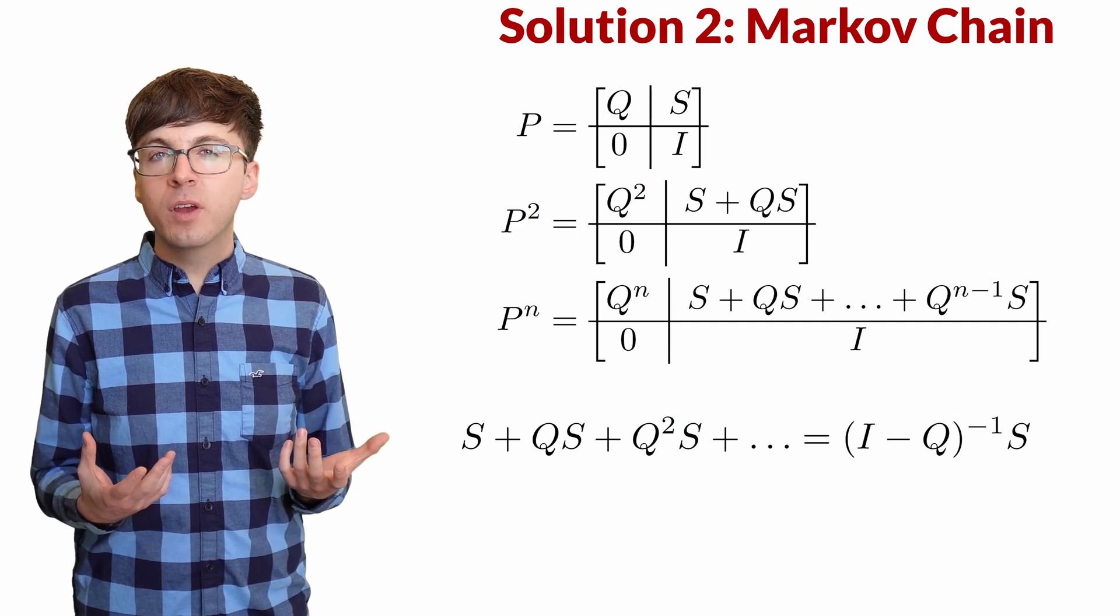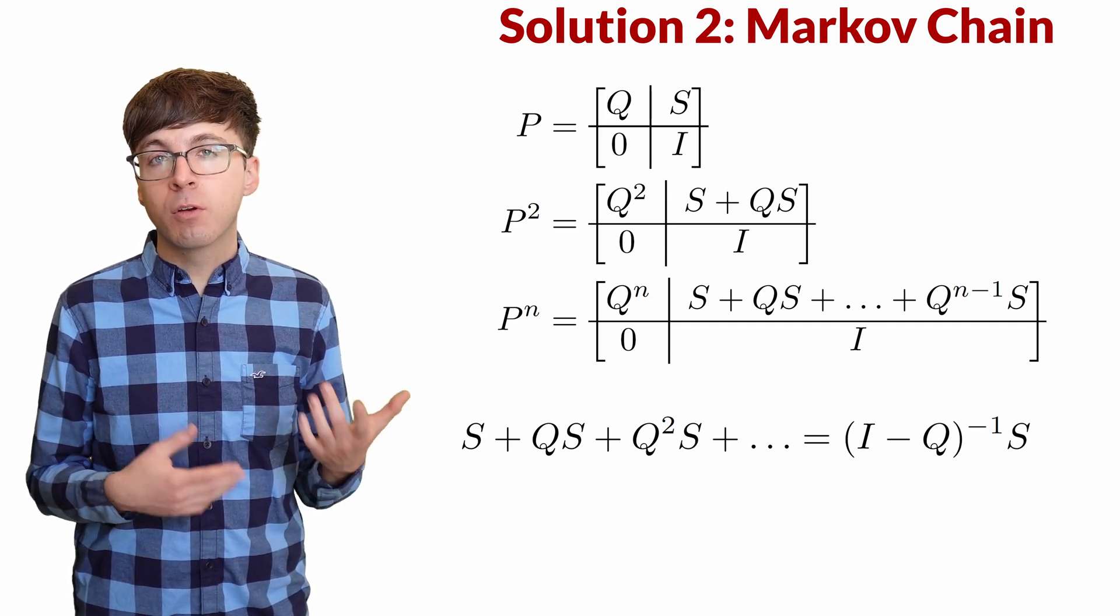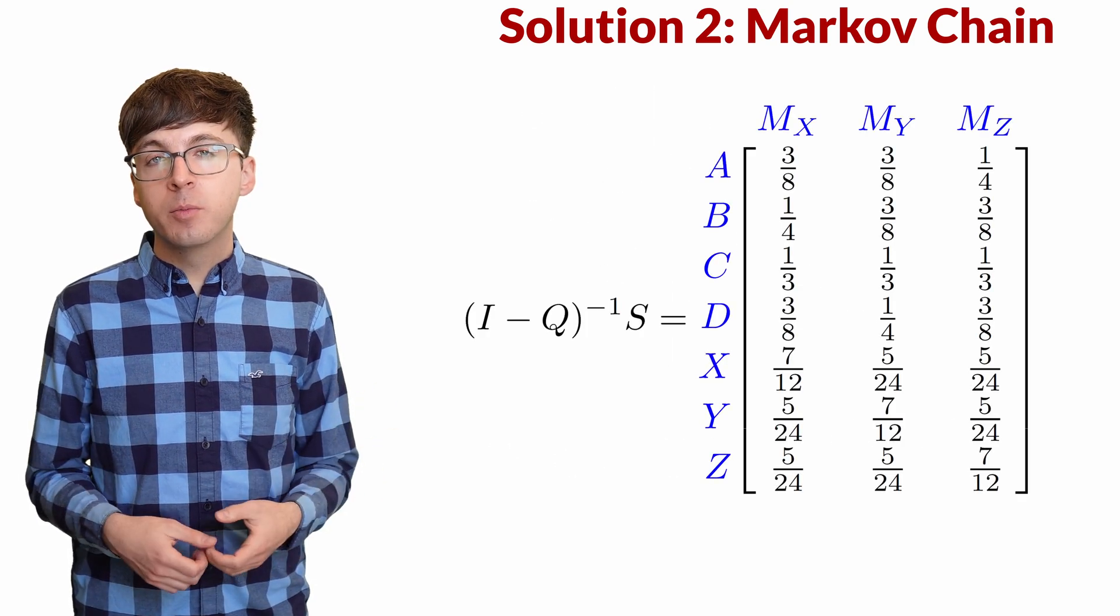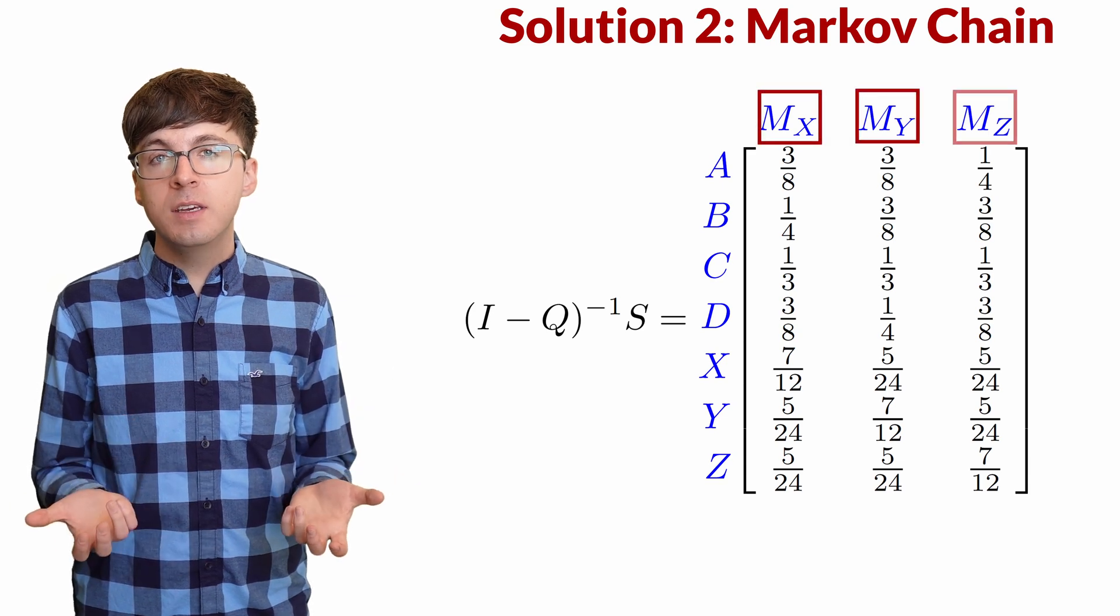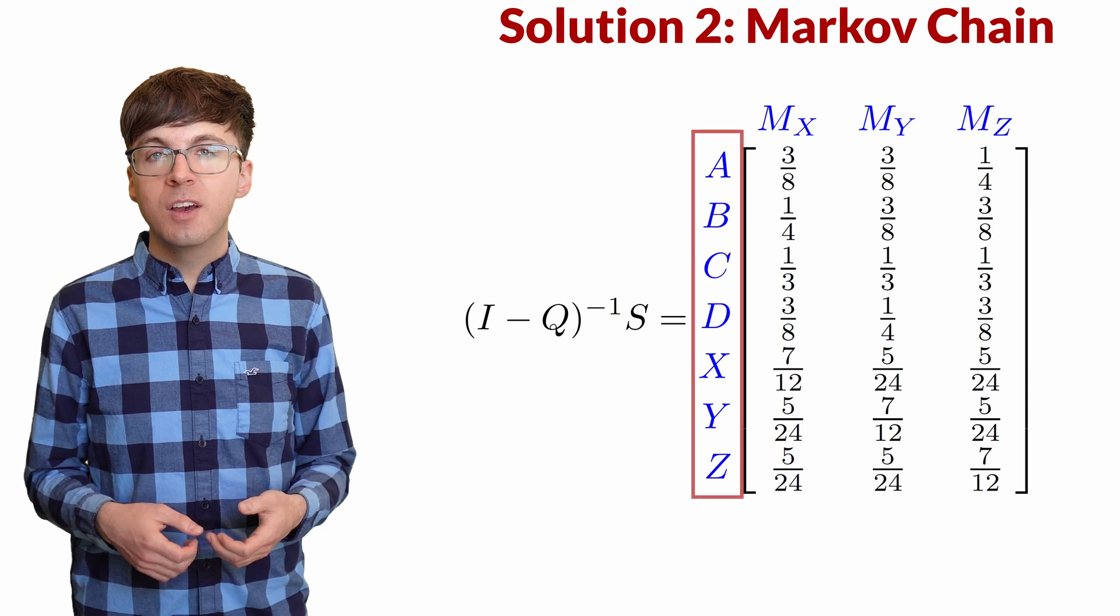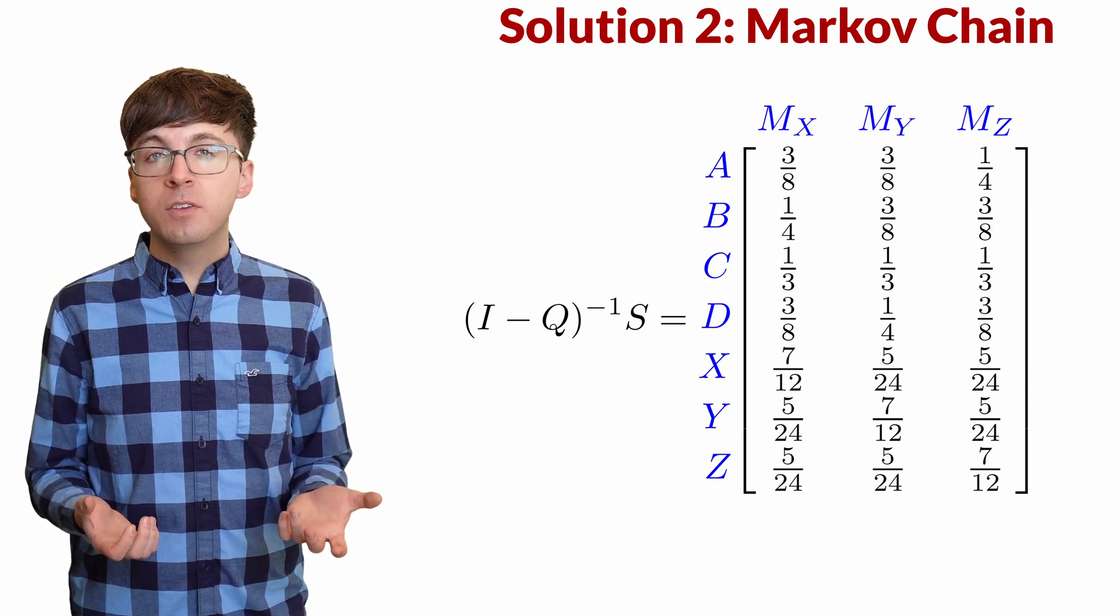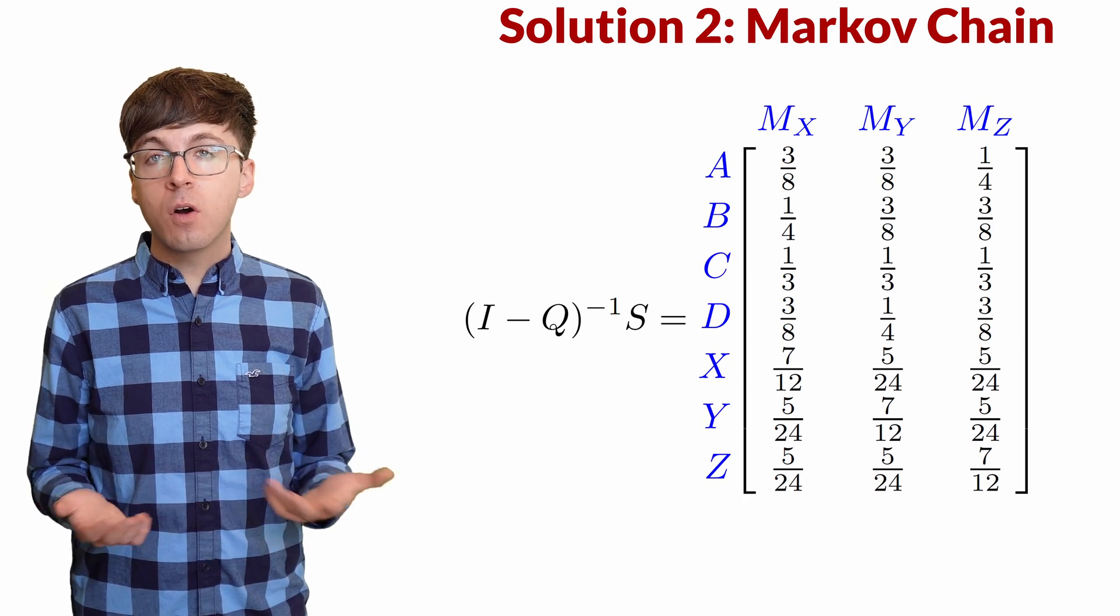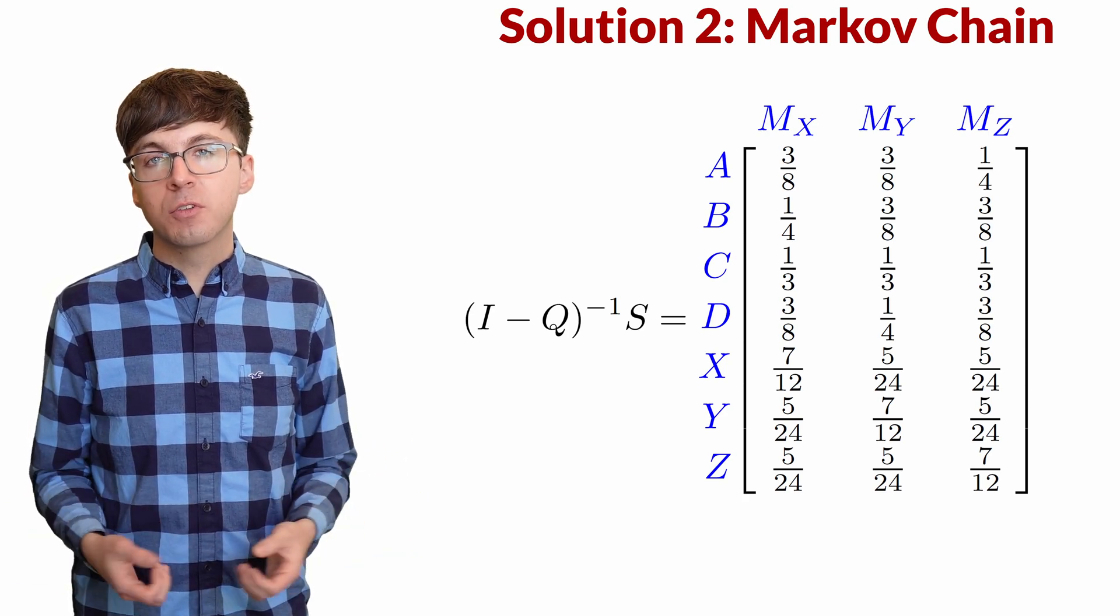This matrix gives us the exact probabilities that the monster is fed by X, Y, or Z, given that the potato starts at each of the seven vertices. We found all of these probabilities with just a quick matrix calculation. And the solution works for all Markov chains, even ones without nice symmetries.